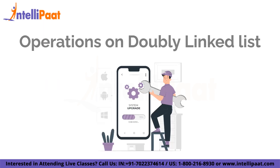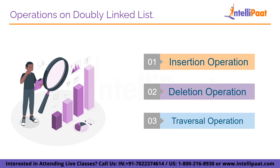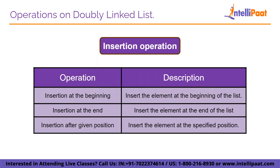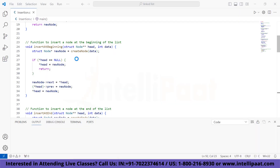Now that we understand the basics of doubly linked list, let us look into the operations. You can perform insertion, deletion, and traversal operations on a doubly linked list. For insertion operations: insertion at the beginning means inserting the element at the beginning of the list; insertion at end means inserting at the end of the list; and insertion after a given position means inserting the element at the specified position.